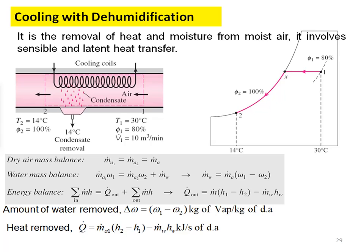The first combined process is cooling with dehumidification. Here, along with sensible cooling, we are going to dehumidify the air — that means we remove the moisture content present in the atmospheric air. This cooling coil has a larger surface area than in sensible cooling. When the cooling coil surface temperature is less than the dew point temperature of the air at the corresponding pressure, condensation starts.